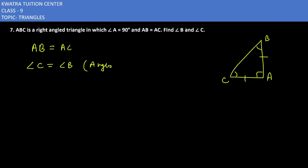Why? Reason would be angles opposite to equal sides. Angle C is equal to angle B. Now, what will you use next property? You will use angle sum property. Then you will know the values of B and C. And we have learned from here that angle B is equal to C.